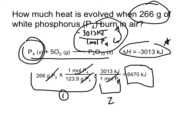Grams of P₄ and grams of P₄ cancel, moles of P₄ and moles of P₄ cancel, and kilojoules are what remain. So when 266 grams of white phosphorus is burned in air, 6,470 kilojoules of heat are evolved. Remember, delta H and Q are directly related, so having an enthalpy value while asking about heat is completely acceptable.